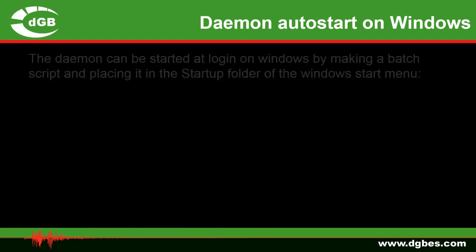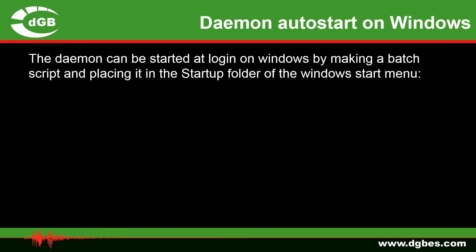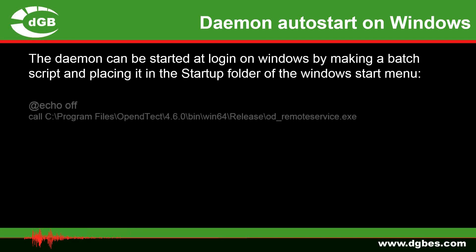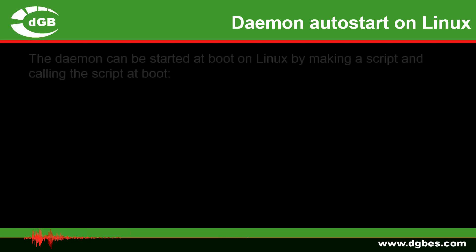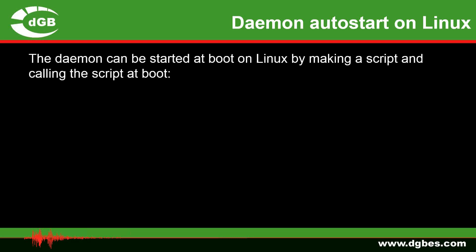To have the remote service executable start on Windows on startup, you can do this by making a batch script and placing it in the Startup folder of the Windows Start menu. The script reads as follows. A similar process can be performed on Linux, calling the script at boot in the following way.